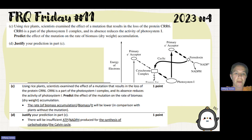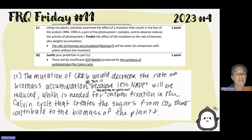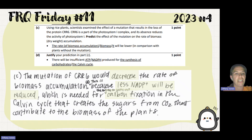The rate of biomass accumulation will be lower in comparison to a plant without the mutation. There would be insufficient ATP and NADPH produced for synthesis of carbohydrates in the Calvin cycle. The student says: Mutation of CRR6 would decrease the rate of biomass accumulation because less NADP+ will be reduced. This is needed for carbon fixation in the Calvin cycle that creates sugars from CO2, which contribute to the biomass of the plants.